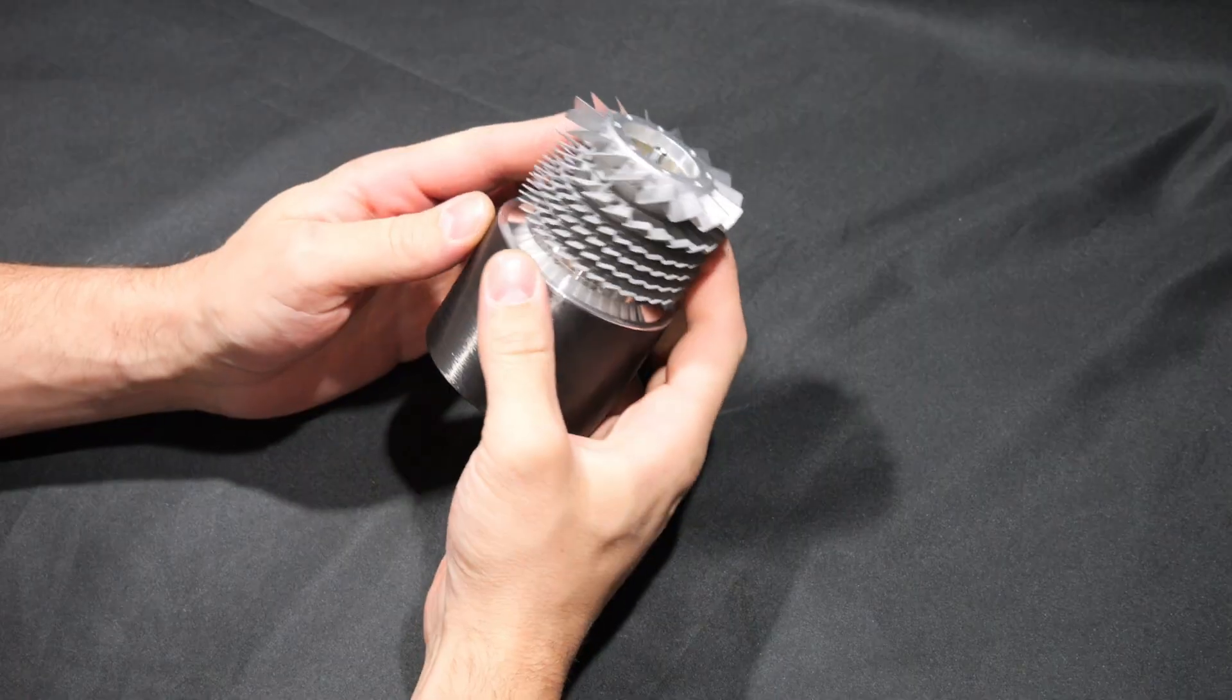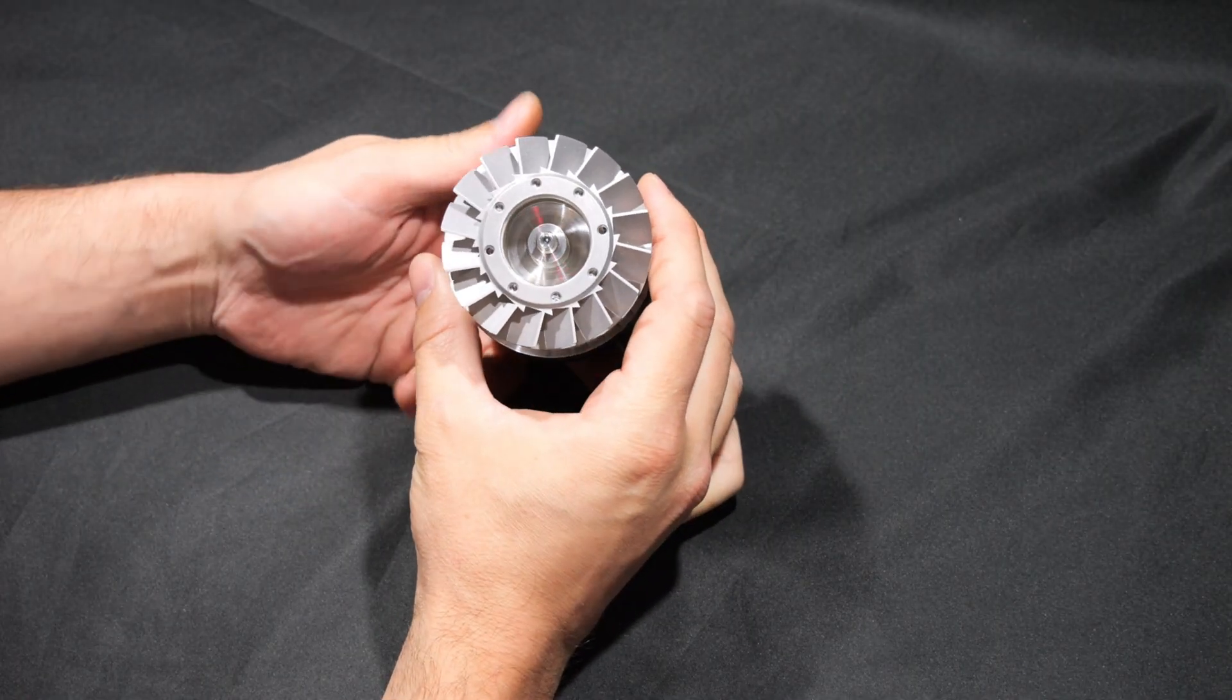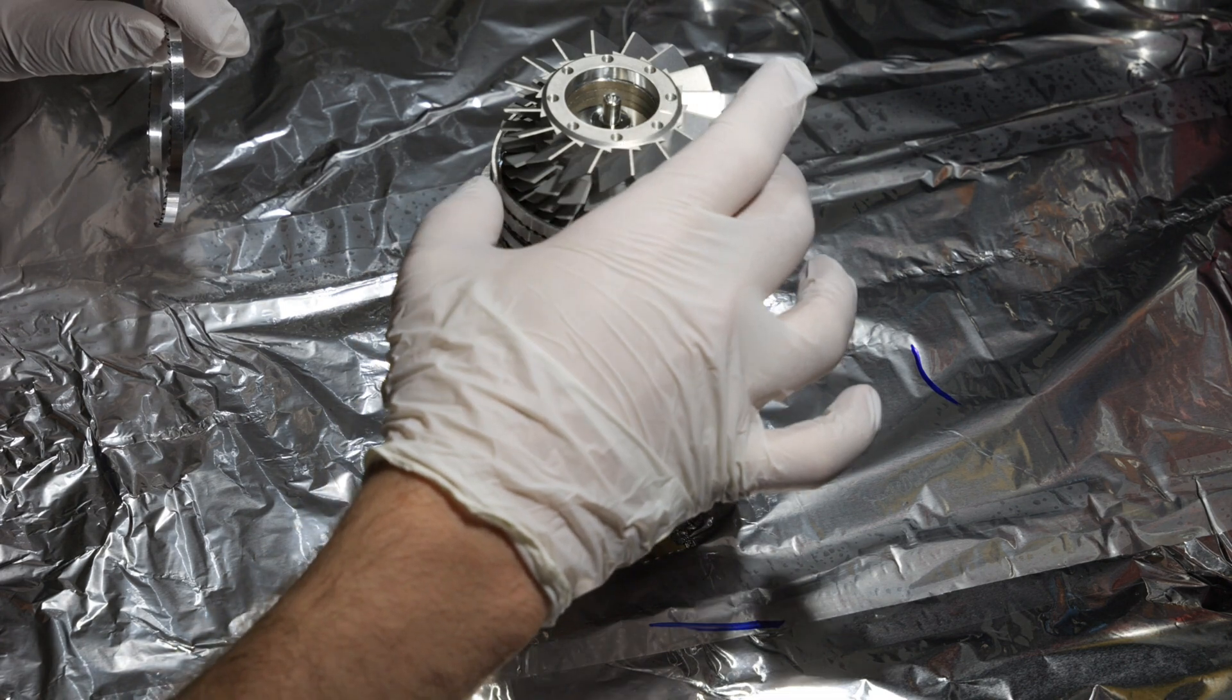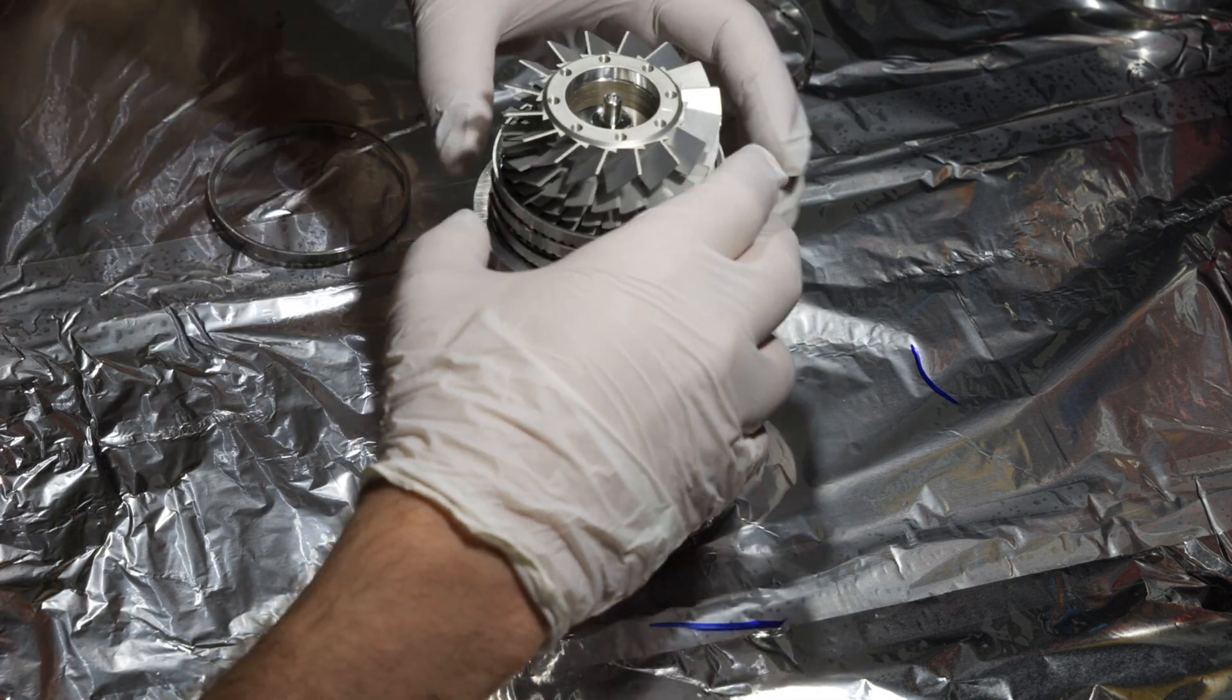Look what I have here. This is the rotor of a turbomolecular pump. A turbomolecular pump is a specialized type of vacuum pump used to achieve high vacuum.